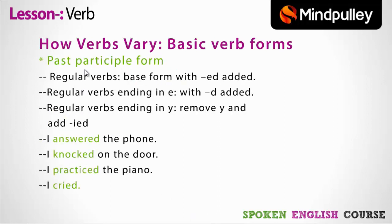Past participle form is slightly more involved. For regular verbs, you use the base form and add '-ed' at the end. So: 'I answered the phone' — 'answer' plus '-ed'. 'I knocked on the door' — 'knock' plus '-ed'. 'I practiced the piano.' When the regular verb ends in 'e', you just add 'd'. When the verb ends in 'y', remove the 'y' and add '-ied': 'I cried' — the 'y' of 'cry' is removed and '-ied' is added.